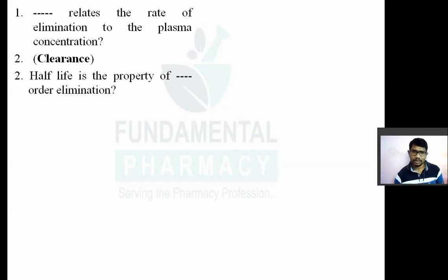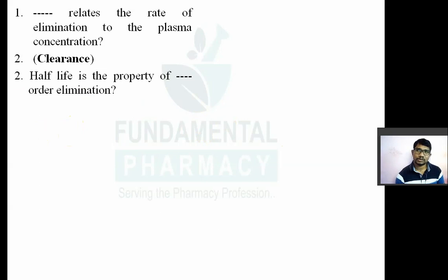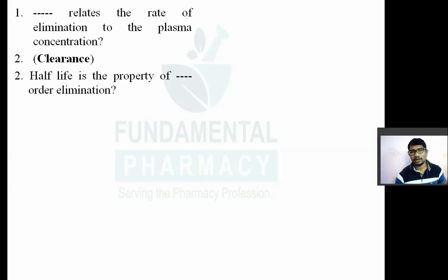Second question: half-life is a property of which order of elimination? There are different orders for kinetic processes — absorption, distribution, metabolism and elimination. There are orders of reaction: zero order, first order, and second order. If the rate of reaction does not depend on the concentration of any reactant, that is zero order. If it depends on concentration of one reactant, that is first order. If it depends on both reactants, that is second order.